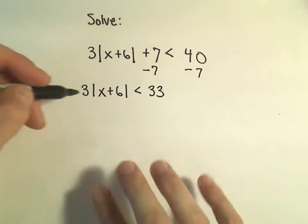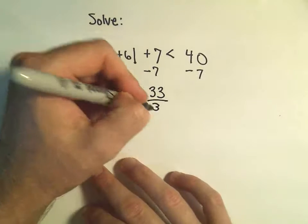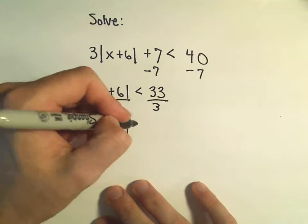At this point what I'm going to do just to get rid of the 3 is I'm going to divide both sides by 3. So now I have the absolute value of x plus 6 is less than 11.